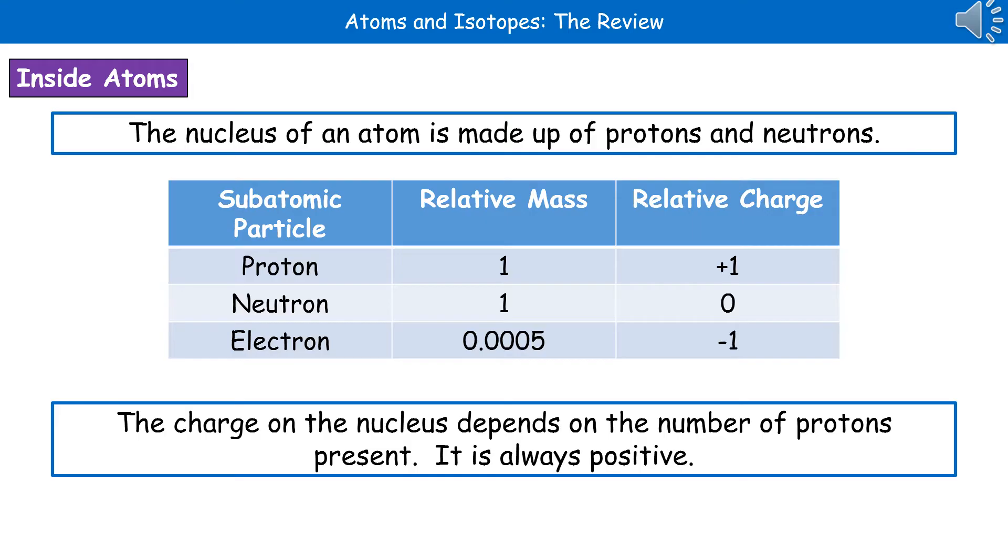So hopefully we remember that the atom itself has a nucleus which is made up of protons and neutrons and has a positive charge. And then the electrons are occurring in shells called orbitals which are around the outside of the nucleus.